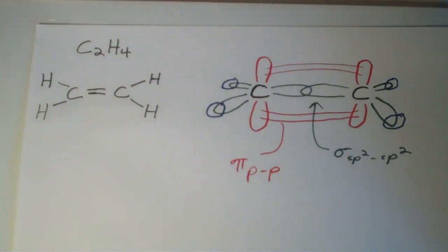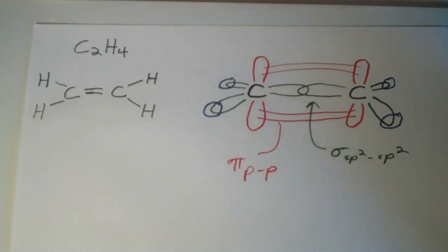So this doesn't necessarily have to be a carbon-carbon double bond. A carbon-oxygen double bond also consists of a sigma bond and a pi bond, okay? So basically what's going on with, let's say, let's just return back to our example in ethylene.